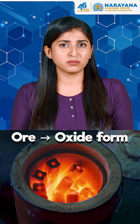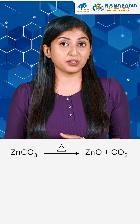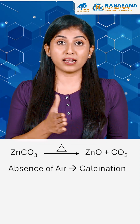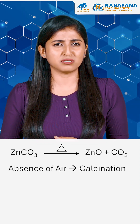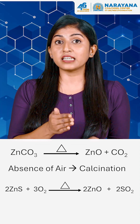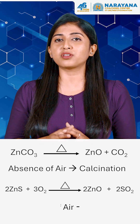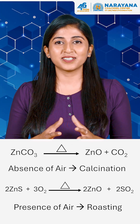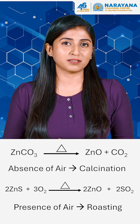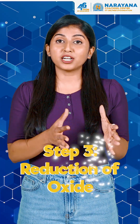Step two: conversion to oxide. Before reduction, ores are converted into their oxide form, as it is easier to extract metal from oxides. For example, zinc carbonate is heated in the absence of air — a process called calcination — while zinc sulfide is heated in the presence of air, a process called roasting.